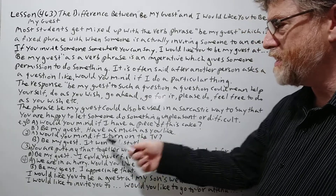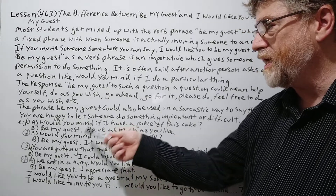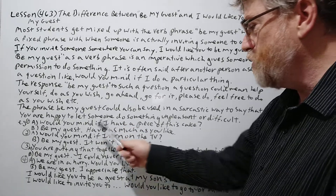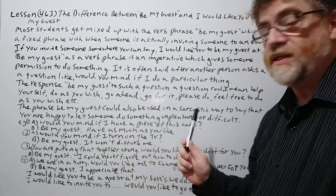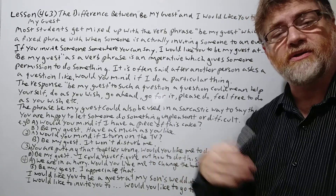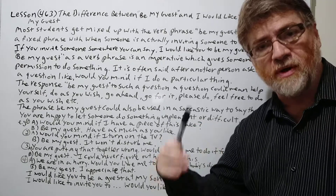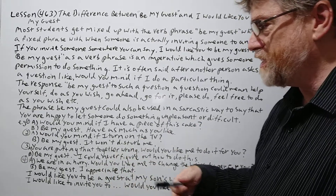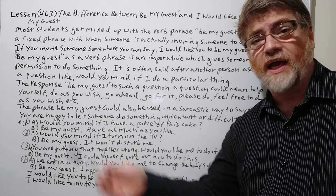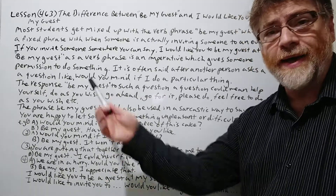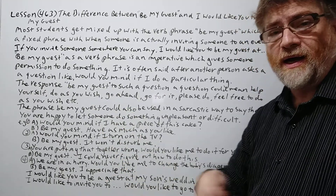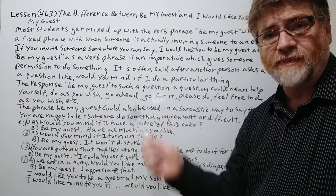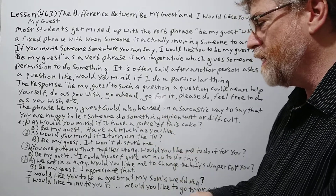Most of these examples at the beginning are A/B parts. Example one: A says 'Would you mind if I have a piece of cake?' This is the typical one — B says 'Be my guest. Have as much as you like.' So you're saying go ahead, please do, help yourself.